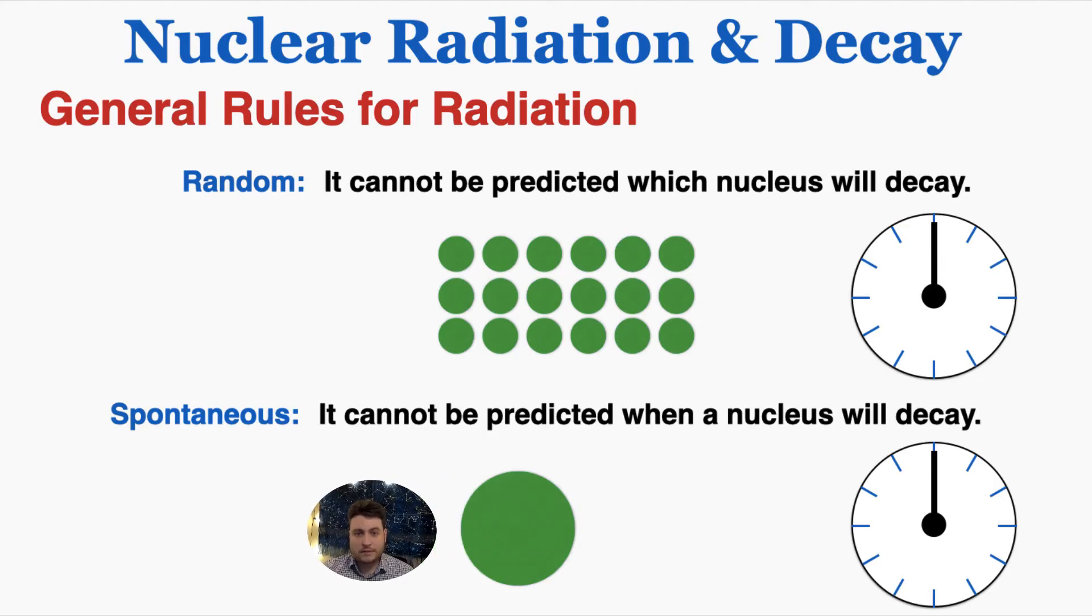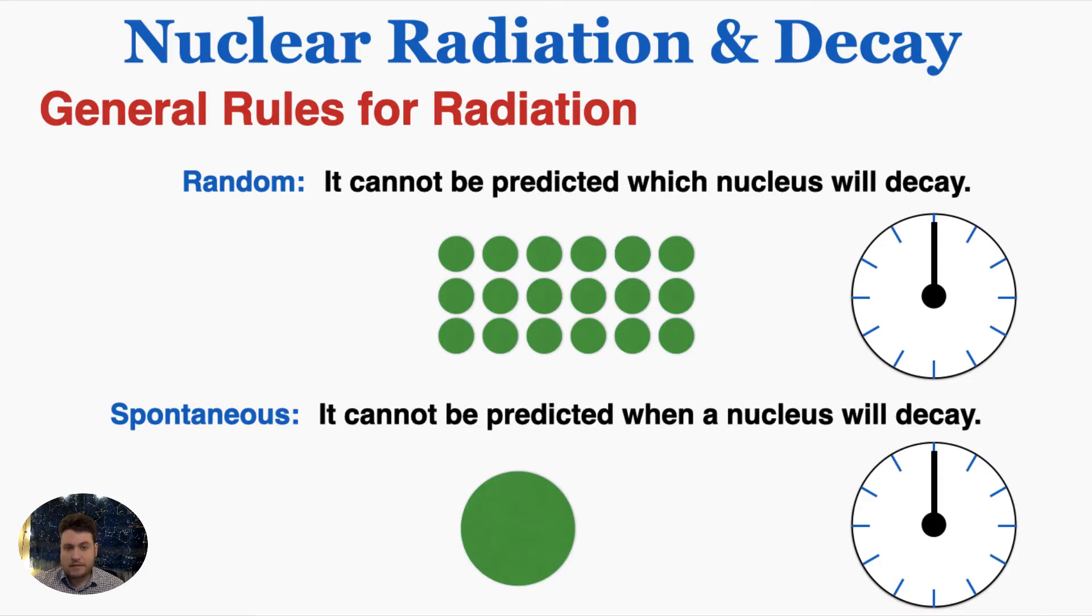These are two important and, to me, extremely strange and mysterious parts of radiation. We say that radiation is random and spontaneous. It's random because it cannot be predicted which nucleus will decay, and it's spontaneous because it cannot be predicted when a nucleus will decay.